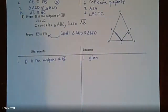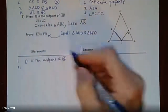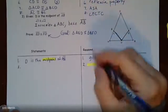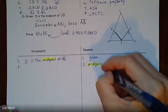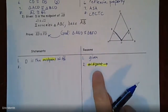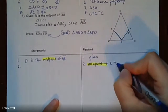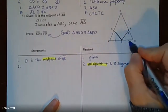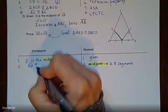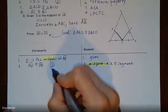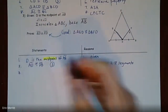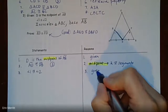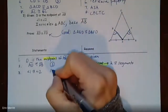Starting with the first given: D is the midpoint of AB. Midpoint is the vocab term — midpoint implies two congruent segments. Looking at the diagram, AD is congruent to DB. That's a pair of sides in our triangles. Next given: angle one is congruent to angle two — they just hand us a pair of angles right there.